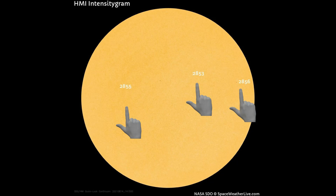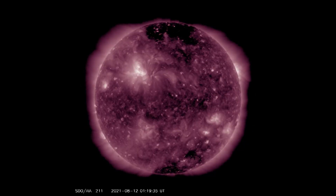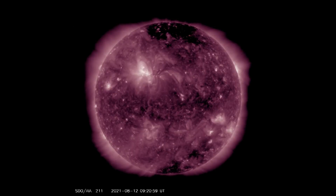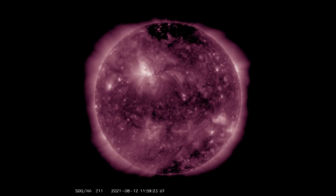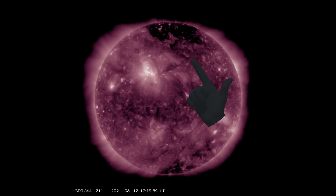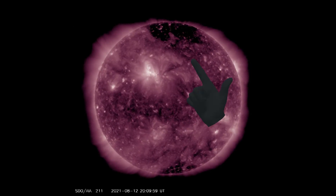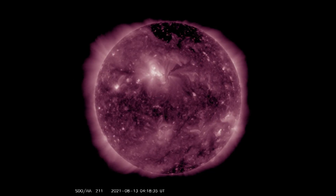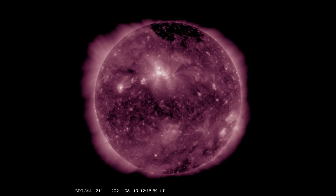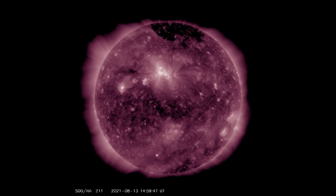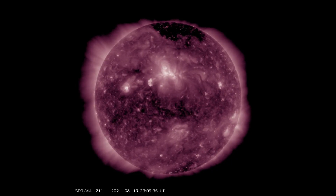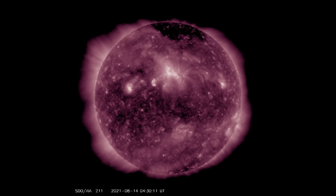With the SDO 211 filter, the view of the latest coronal hole can be seen. They appear dark because they are cooler, less dense regions than the surrounding plasma, and are regions of open unipolar magnetic fields. This open magnetic field line structure allows the solar wind to escape more readily into space, resulting in streams of relatively fast solar wind.